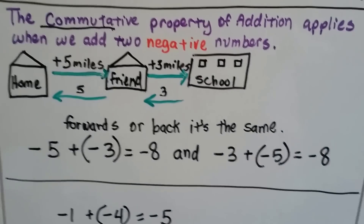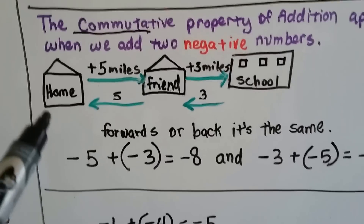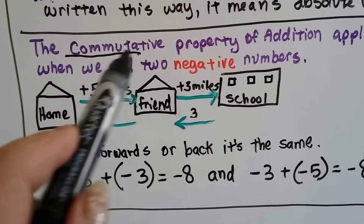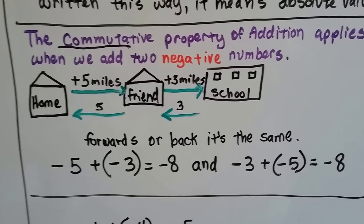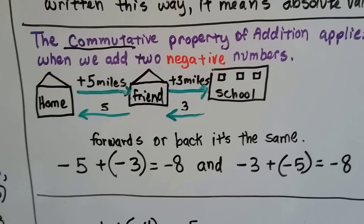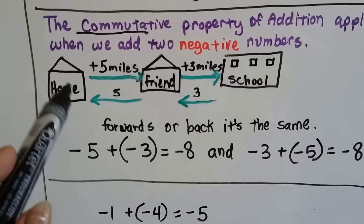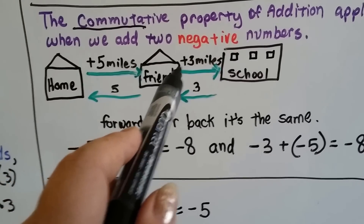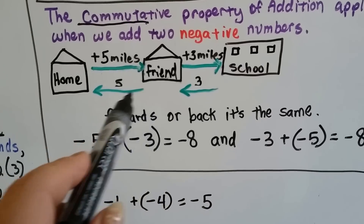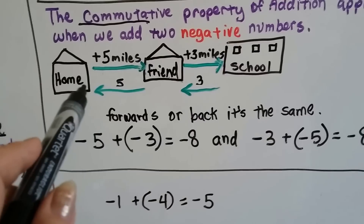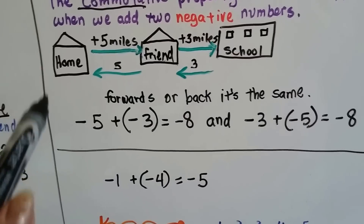Do you remember the commutative property of addition? It applies when we add two negative numbers. Think of it this way: when you commute to work or school, it's the way you travel to get there. If you go to your friend's house — five miles — and then to school — three miles — that's eight miles. Coming back, it's three miles to your friend's house and five miles home. It's still eight miles. It doesn't matter which way you're going; the trip is the same distance.